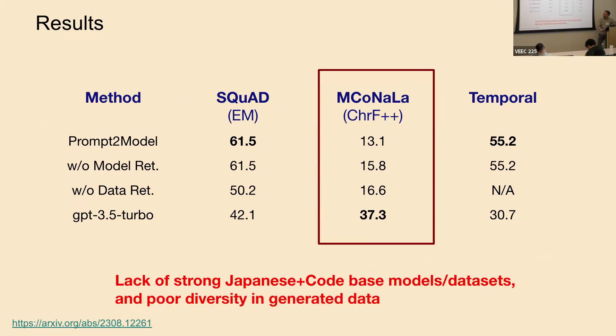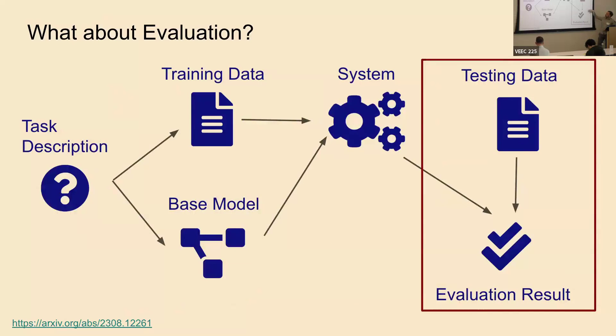For the middle one, we had a problem of lack of a strong Japanese code base model and dataset and also poor diversity in the generated data because GPT-3.5 wasn't very good at generating this data. So it works some of the time, it doesn't work all the time.